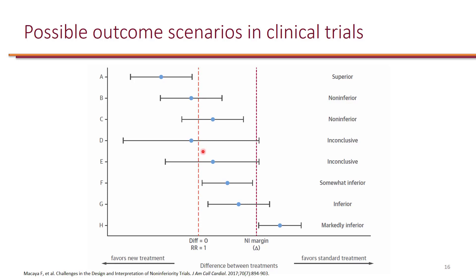The orange line is showing you the point of no difference. So if you're looking at the difference, zero would mean no difference. And if it's relative risk, one would mean no difference. If it's less than zero, or relative risk less than one, it would be in favor of the intervention treatment. On the other side, you will be in favor of standard treatment or the control group.